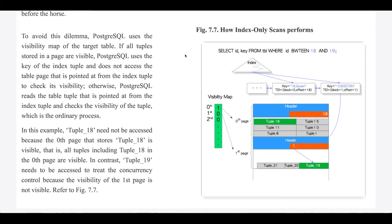If all tuples stored in a page are visible, Postgres uses the key of the index tuple and does not access the table page that is pointed at from the index tuple to check its visibility. Otherwise, Postgres reads the table tuple that is pointed at from the index tuple and checks the visibility of the tuple, which is the ordinary process.